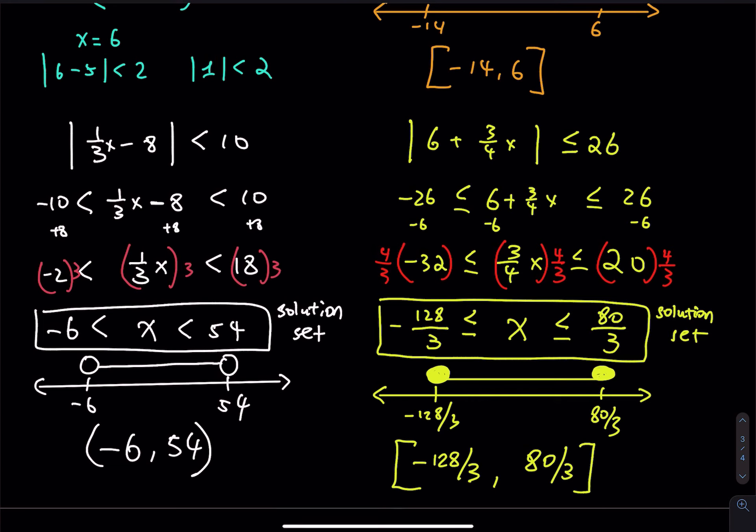That's how you deal with absolute value inequality for case 1, where you have a less than with the steeper side facing the absolute value. In the next video, case 2, we will do greater than. If you find this instruction helpful, let me know in the comments, like the video, and subscribe to my channel. I appreciate your help and support — see you in the next one.